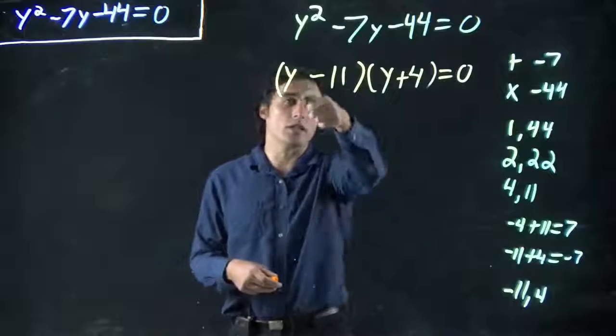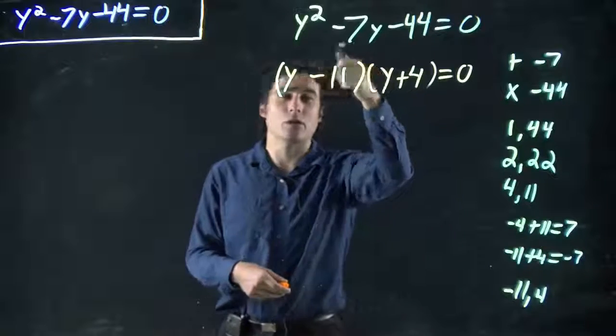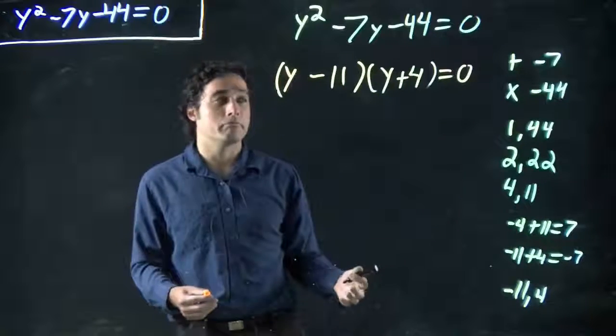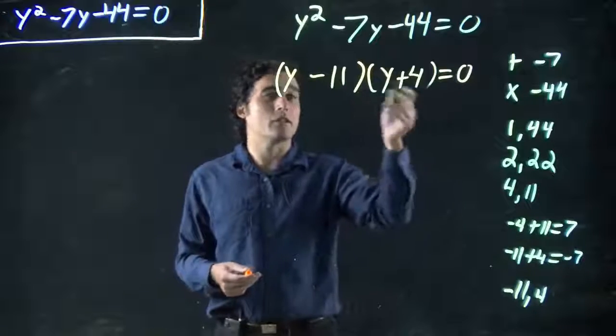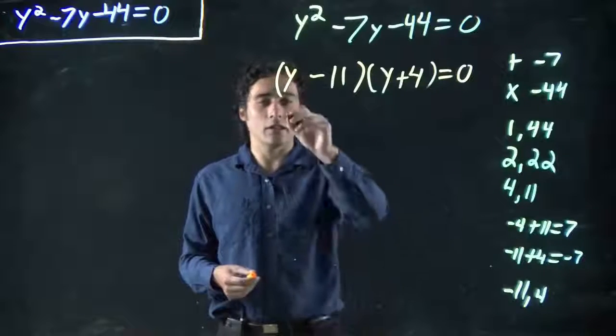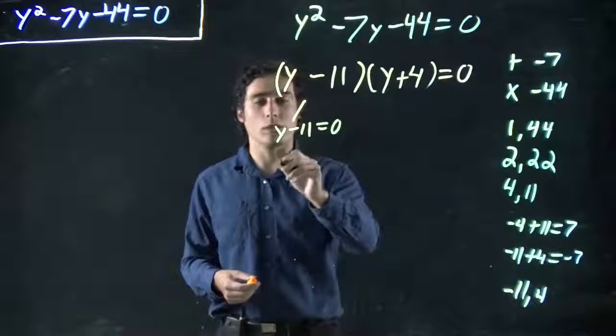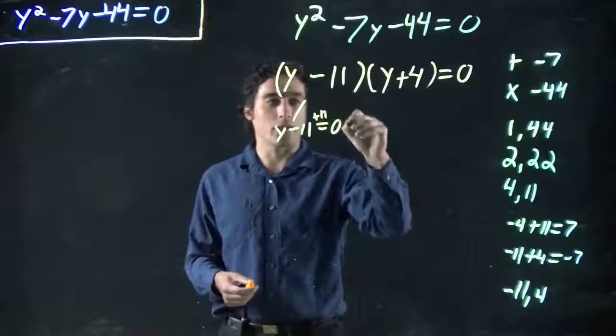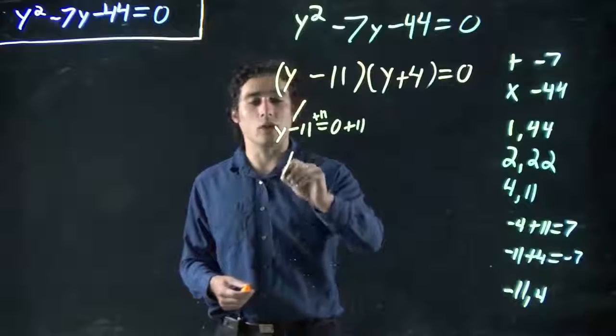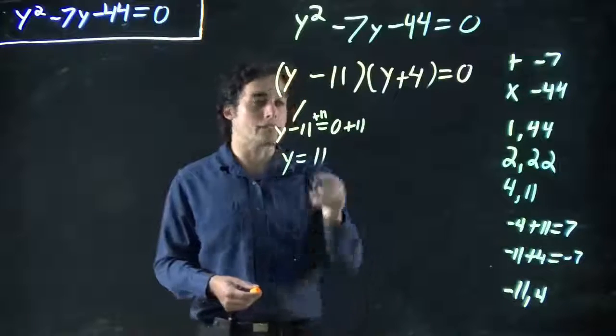And remember, if we wanted to, we could expand this out to make sure we get the same result. If we don't, we screwed it up somewhere. But assuming we're right, one or both of these has to equal 0. Y - 11 = 0. Well, plus 11 on both sides means y = 11. That's a solution.